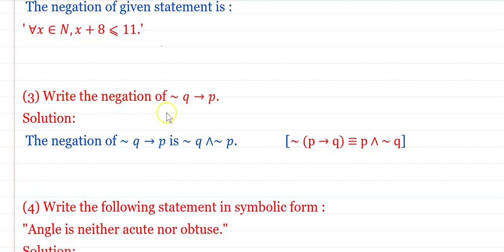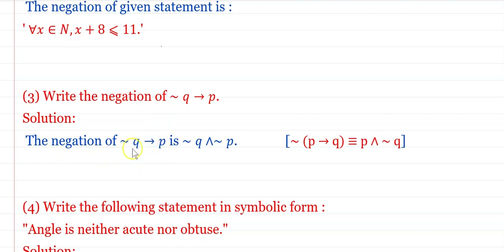Write the negation of: negation q implies p. The negation of p implies q is: p ∧ ¬q. Using this, the negation of ¬q implies p gives us: negation of (¬p implies q) is ¬p ∧ ¬q. Keep the first part as is and negate q. This is the negation of ¬q → p.